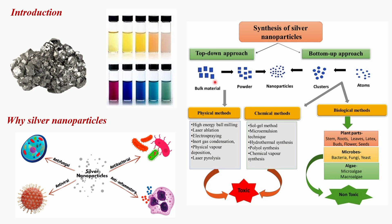There are several synthesis methods, but we'll focus on three main categories: physical, chemical, and biological methods. In general, nanoparticles can be synthesized by two approaches: top-down and bottom-up. In the top-down approach, bulk materials are broken down into smaller pieces until they reach the nanoscale. However, this method can sometimes lead to non-uniform particle sizes and shapes. Physical processes include laser ablation, electrospraying, inert gas condensation, physical vapor deposition, and laser pyrolysis.